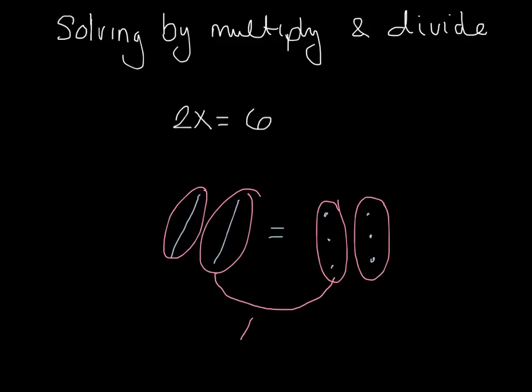So that means X equals three. In our equation we have 2x = 6. What did we do here — did we add, subtract, multiply, or divide? When you split things up into equal groups like we did, you're dividing. That makes sense because the opposite of multiplying is dividing. So if I want to undo multiplying, I'm going to divide.